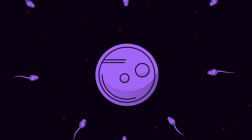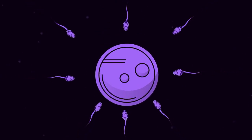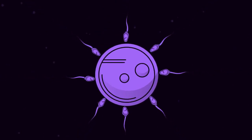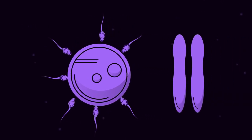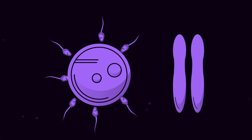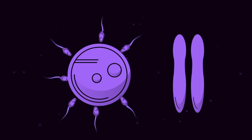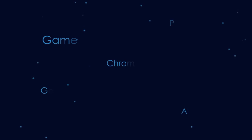The egg and sperm are haploid. When the sperm fertilizes the egg, the chromosomes pair up and become diploid. So, they have to start at haploid so that there is room to pair.